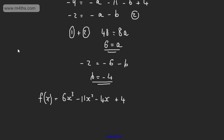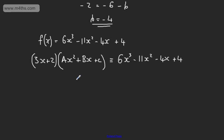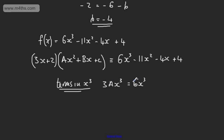At this stage I have a couple of choices. I'm going to take the factor 3x plus 2 as a linear factor and multiply it by a quadratic factor Ax squared plus bx plus c, which will give me the cubic equation 6x cubed minus 11x squared minus 4x plus 4. Looking at terms in x cubed, on the left hand side we have 3Ax cubed, and on the right hand side 6x cubed.